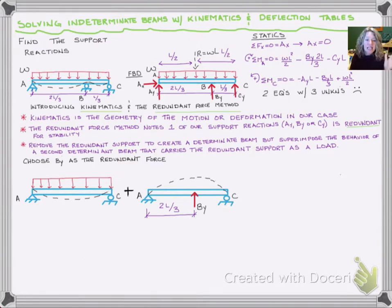I've taken away BY and drawn the first determinate beam with the original loading. I'll add another beam with the exact same support conditions—a pin at A and a roller at C, which is super important. The supports have to match. I couldn't change this to a cantilevered beam. Then I add BY as a force.